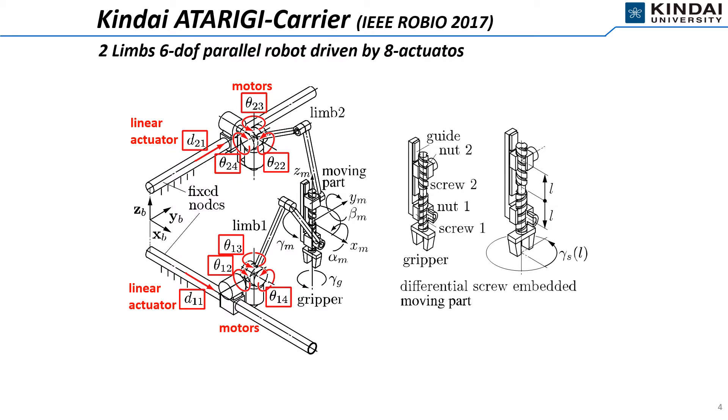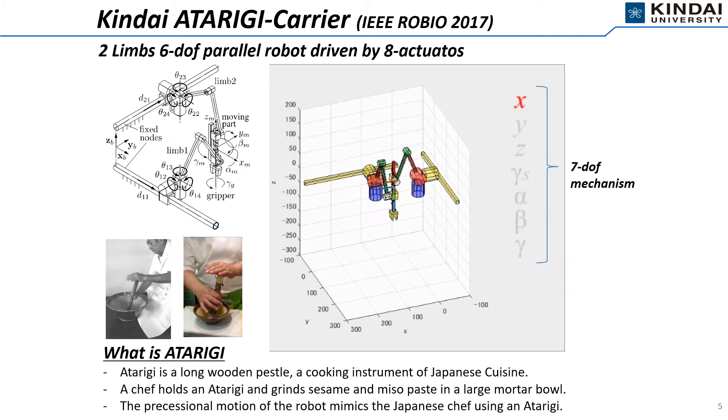We developed 2-LIMBS 6DOF Parallel Robot. The differential screw is embedded in the moving platform. Each limb is controlled by one linear actuator and three motors. This animation demonstrates the motion of the robot. Two limbs drive the moving part to the X, Y, and Z directions.